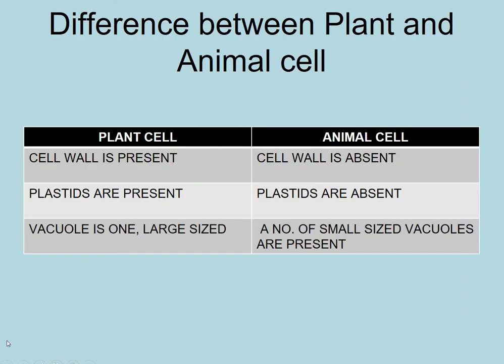Plant cells: cell wall is present, plastids are present, and the vacuole is one and large sized. Animal cells: cell wall is absent, plastids are absent, and a number of small sized vacuoles are present.